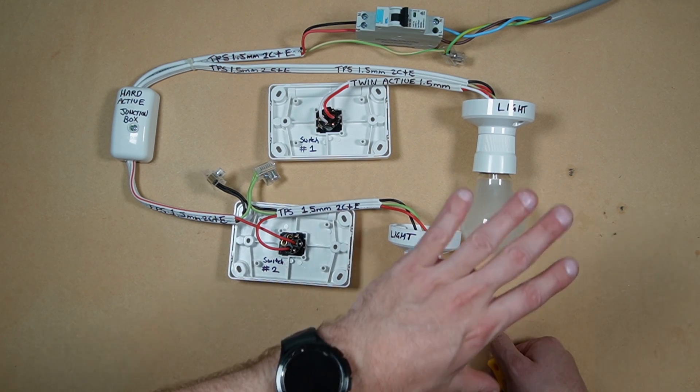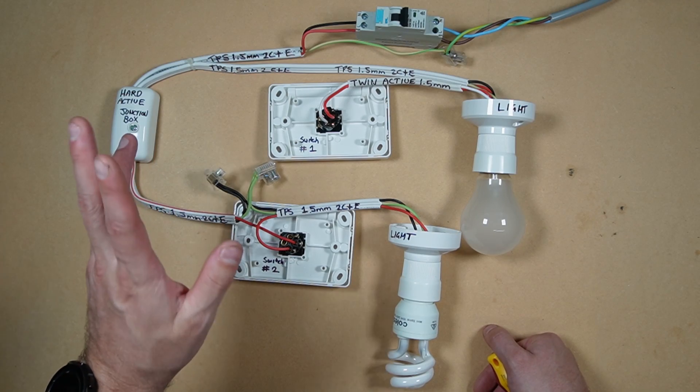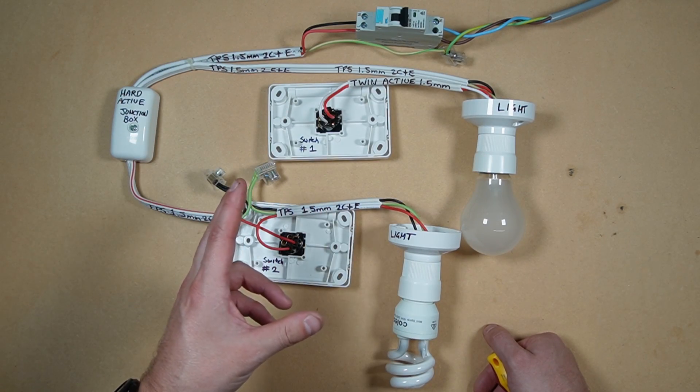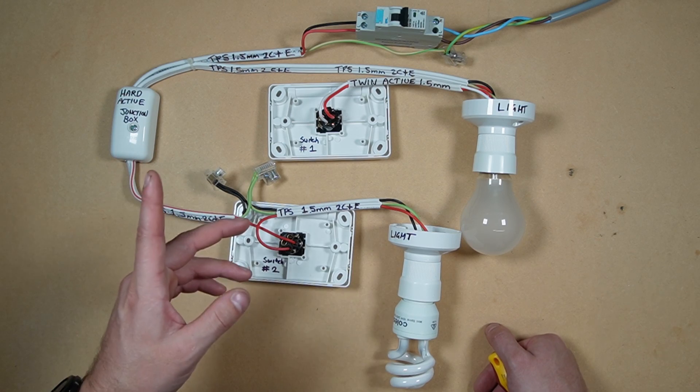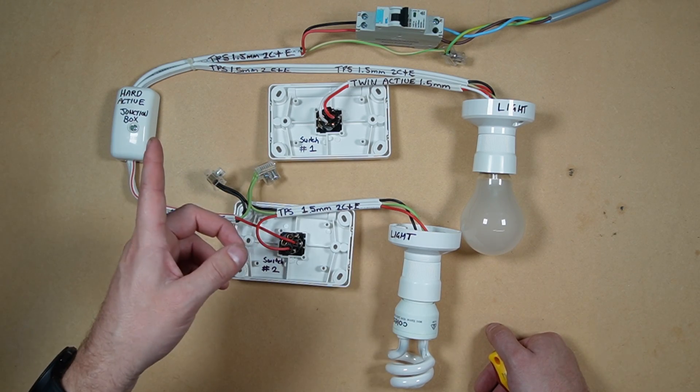If looping at the light and looping at the switch confuses you and you don't know what I'm talking about, I'll have another video that explains both these two methods on paper and it's called How Is Your House Wired. I'll link that above where you can click on it and have a look, and this might make a bit more sense.